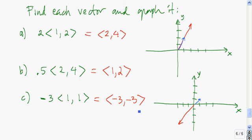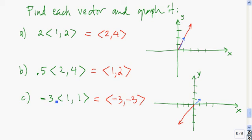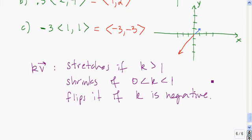For the last example: negative 3 times the vector 1, 1 is the vector negative 3, negative 3, plotted in red. Comparing it to the original vector 1, 1 — because of the negative, the vector negative 3 times 1, 1 points in the exact opposite direction. The fact that it's longer than the original vector is due to the 3. So: multiplying a vector by a number bigger than 1 stretches it; by a number between 0 and 1 shrinks it; by a negative number puts it in the opposite direction and either shrinks or stretches based on the magnitude.